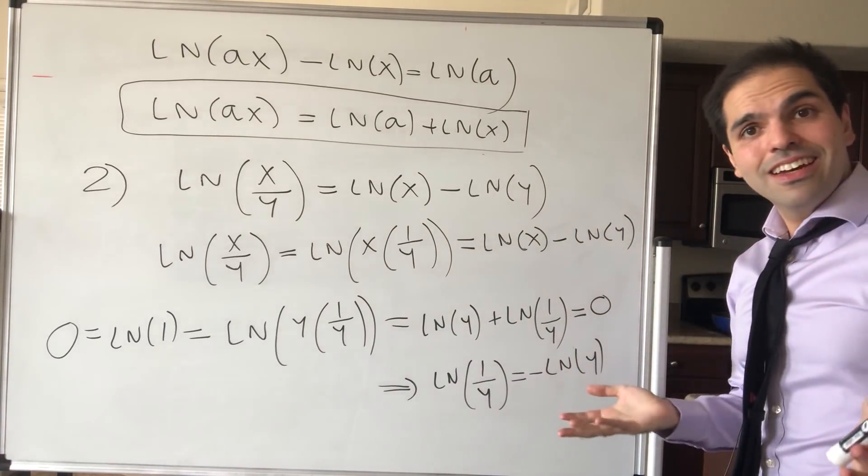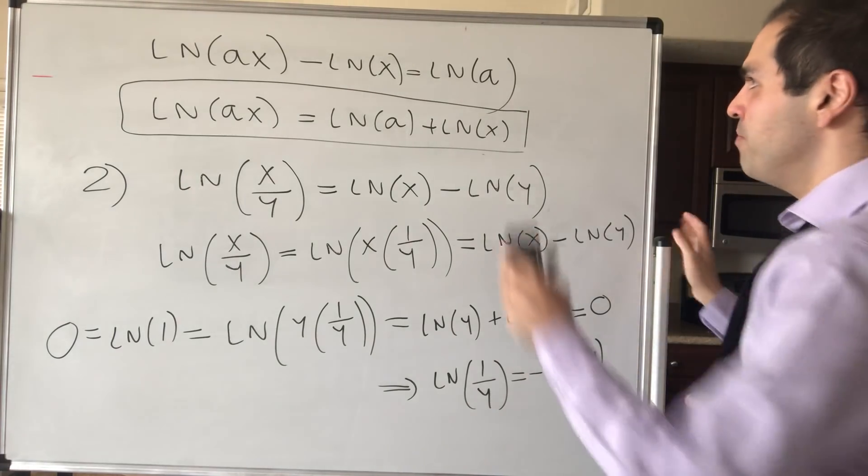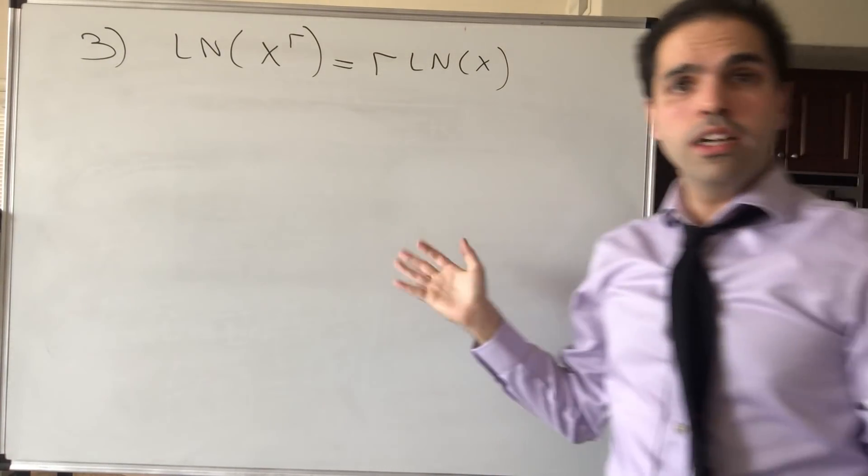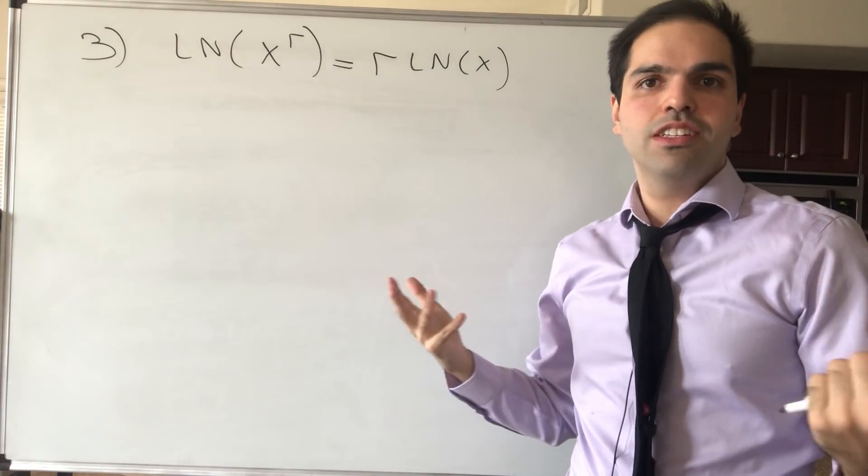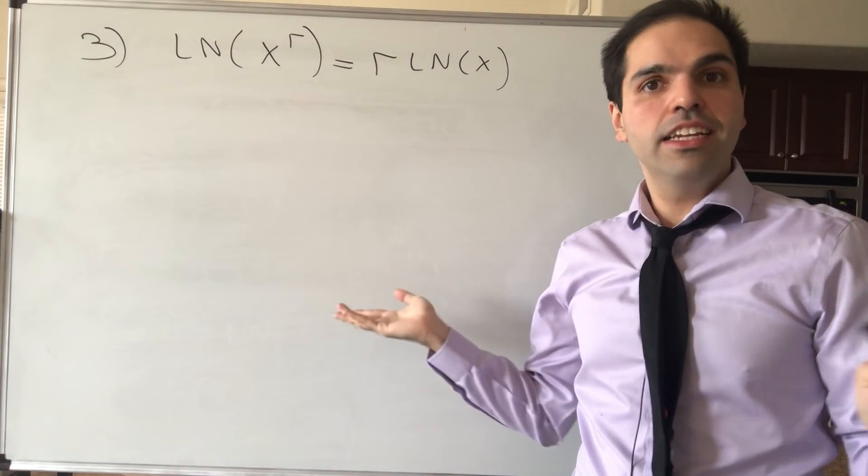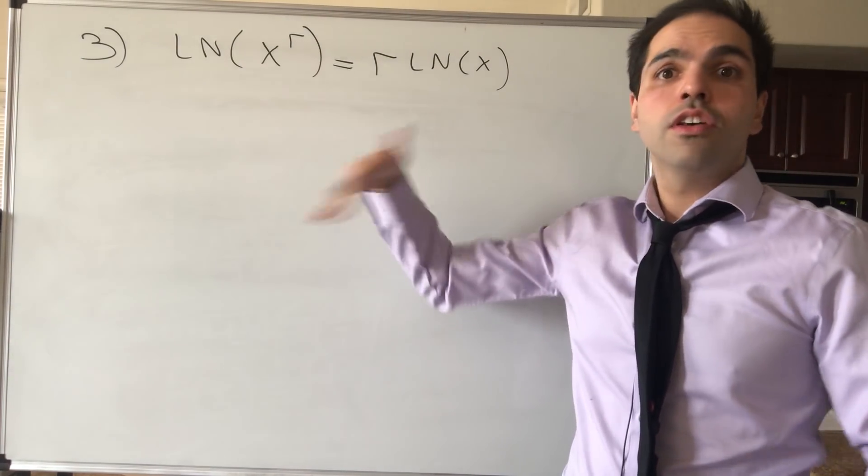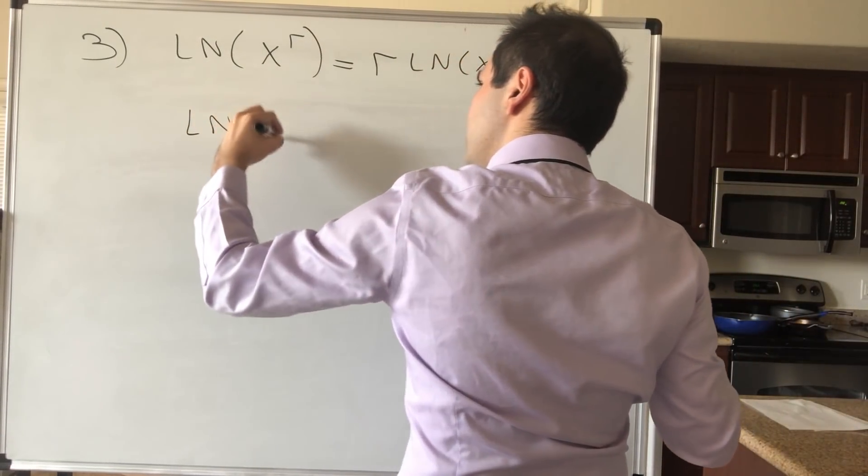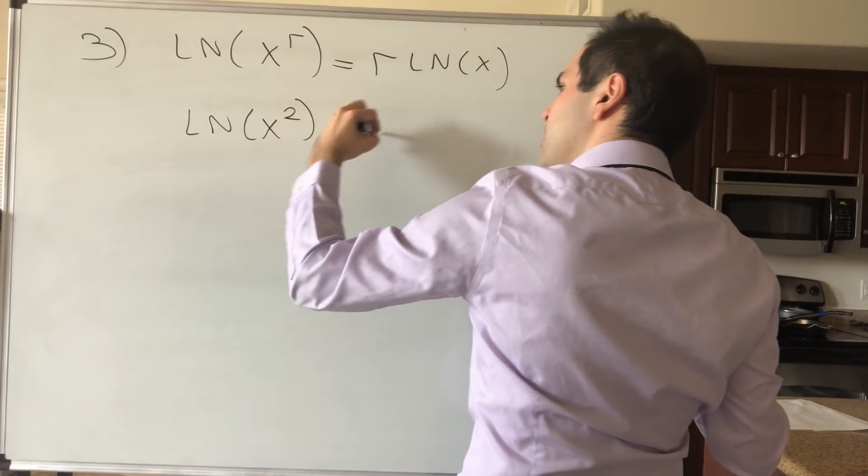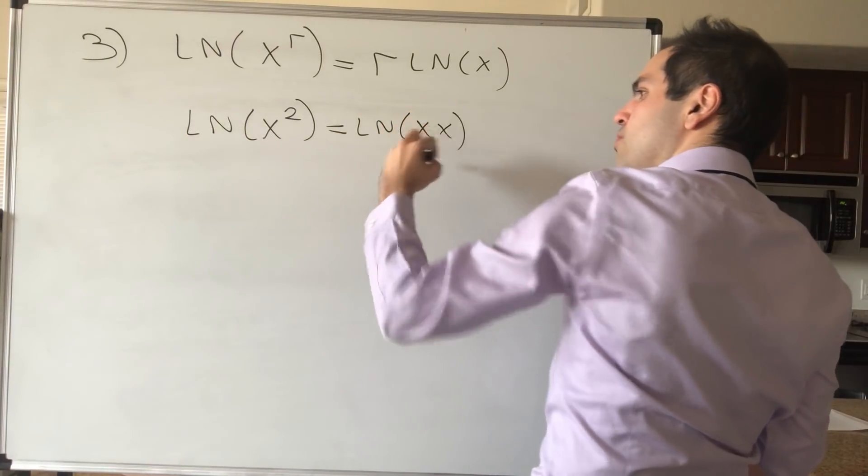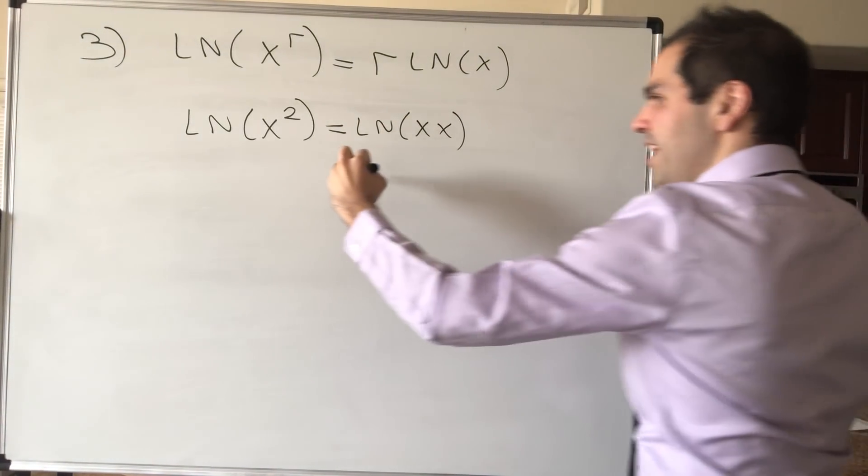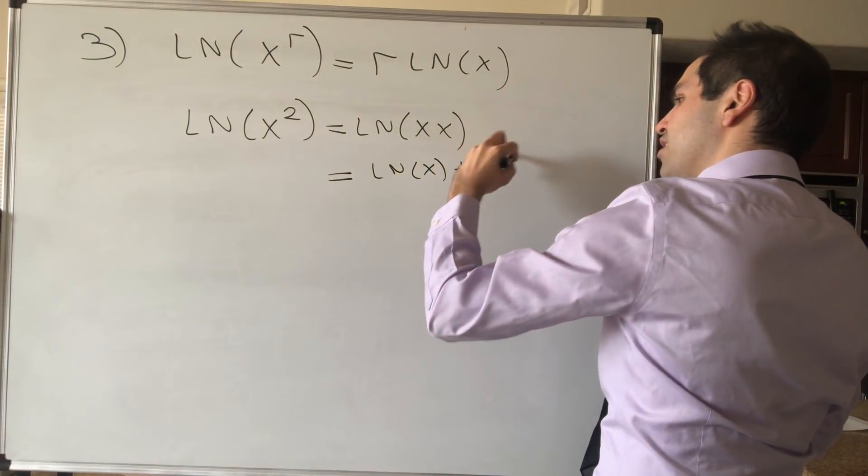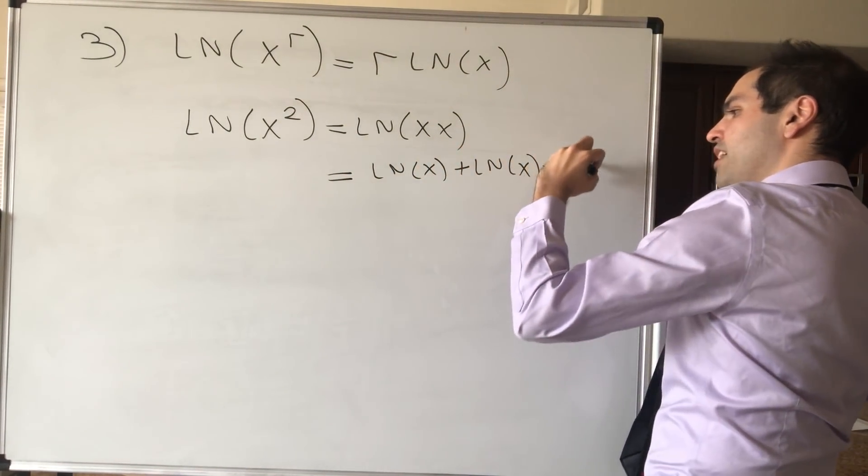And last but not least, for the power law, I do want to say, I will present a method using the chain rule, but it's technically not necessary, because one thing you could do, you could just use the sum law. Let's say for ln of x squared, that is ln of x times x, which by the sum law is ln of x plus ln of x, which is 2 ln of x.